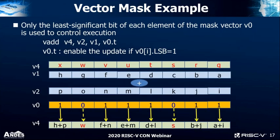We also support vector masking. When doing an array operation, we might filter out certain values — that's exactly what vector masking does. The vector mask is stored in V0 at the LSB, and we can say whether an element needs to be calculated or filtered out. Vector masking is fully supported.